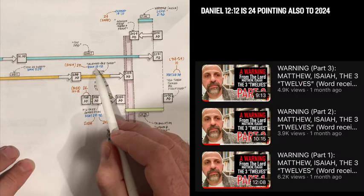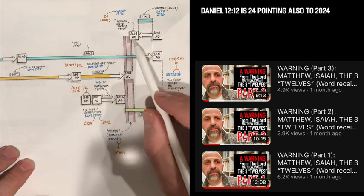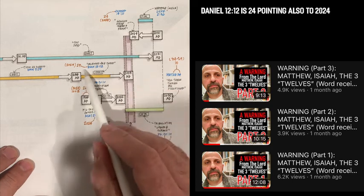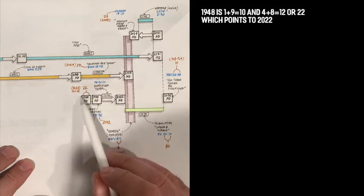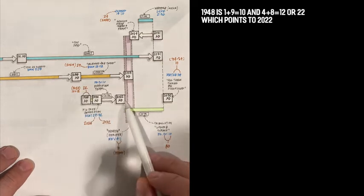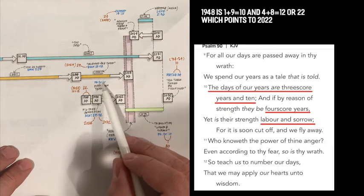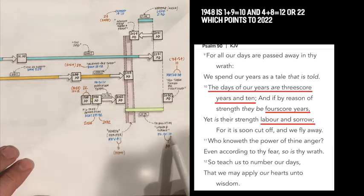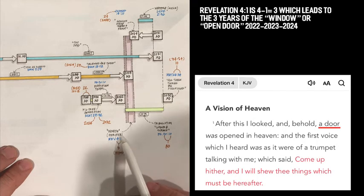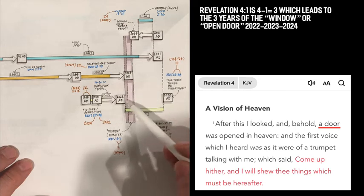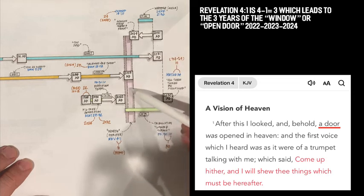So you begin to see how the big picture now fits. Now, before we move on to the second chart, I want you to look at some of how these numbers are starting to make a lot of sense. The 1212 of Daniel, which again fits into the study that we did of the 312s, now is the 212s, which points to 24, which is the outer border of the window. Also, 1948 - 1 and 9 is 10, 4 and 8 is 12, so it's 2022. That fits incredibly well with it being 70 years to 2022.